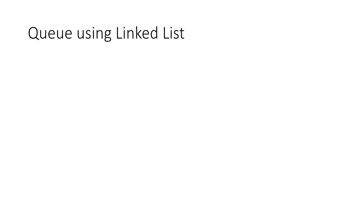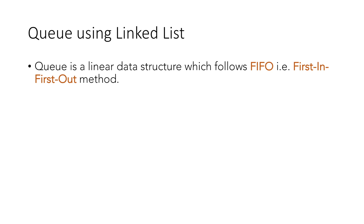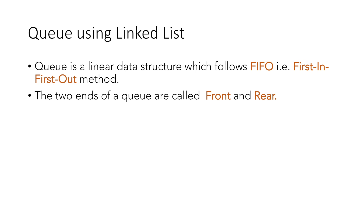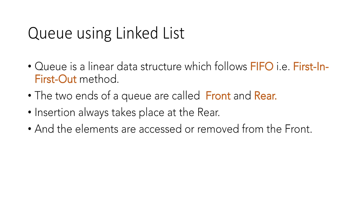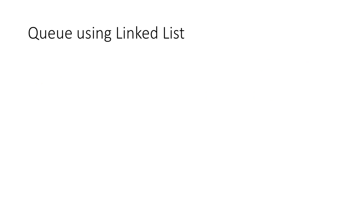Queue is a linear data structure which follows FIFO, that is first in first out method. The two ends of the queue are called front and rear, where insertion always takes place at the rear and the elements are accessed or removed from the front.